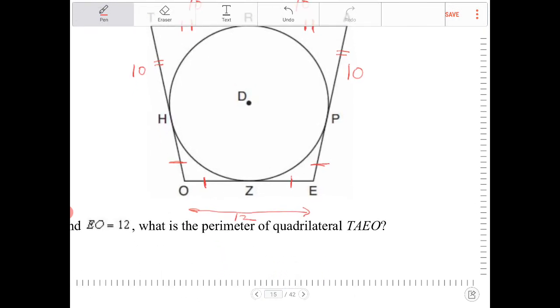Let's move down over here. Since OE is 12, then OZ is 6, and all of these segments are going to be 6.